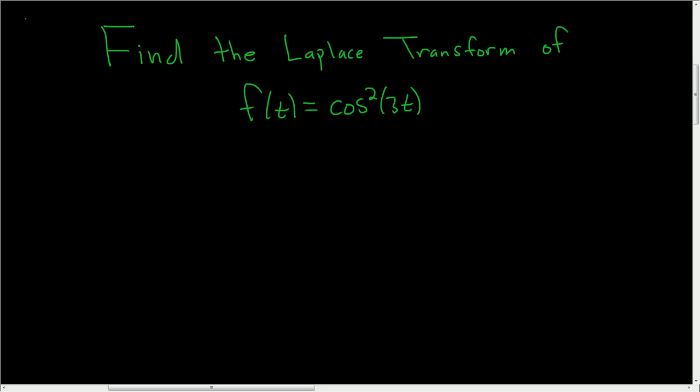We're being asked to find the Laplace transform of the cosine squared of 3t. I don't know a formula offhand for this, although I'm sure we could come up with one. So what we'll do is use an identity.